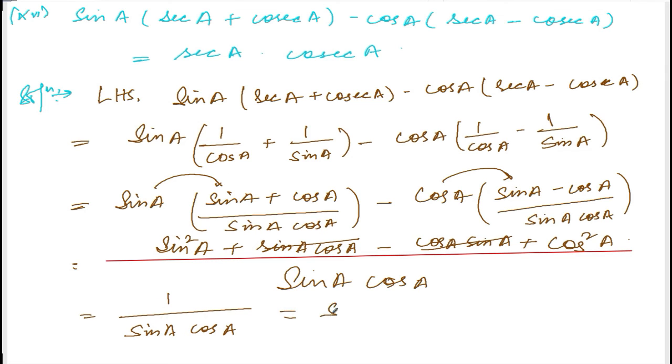1 divided by sin A is cosec A, and 1 divided by cos A is sec A.